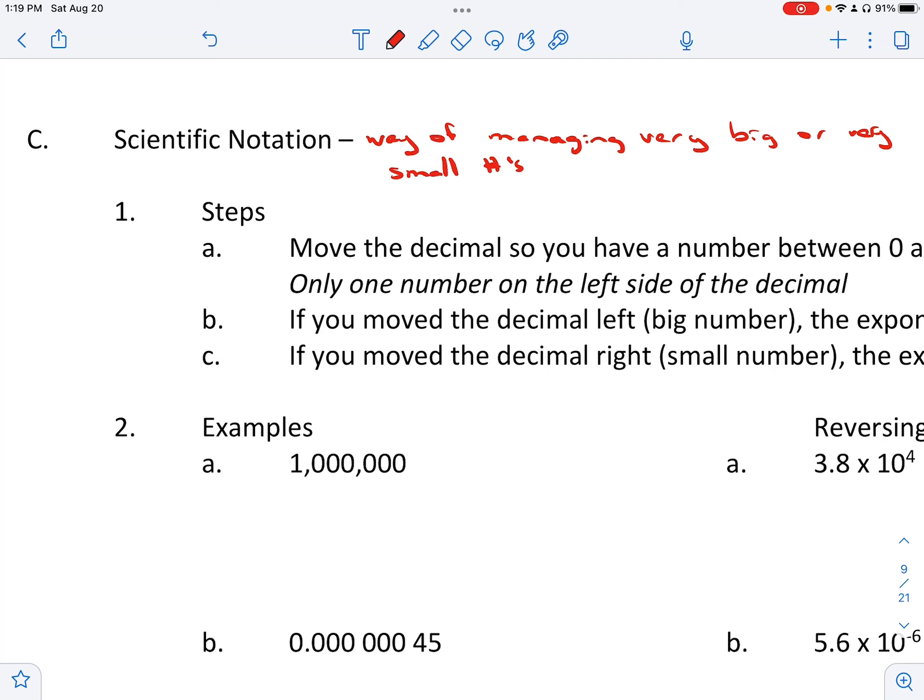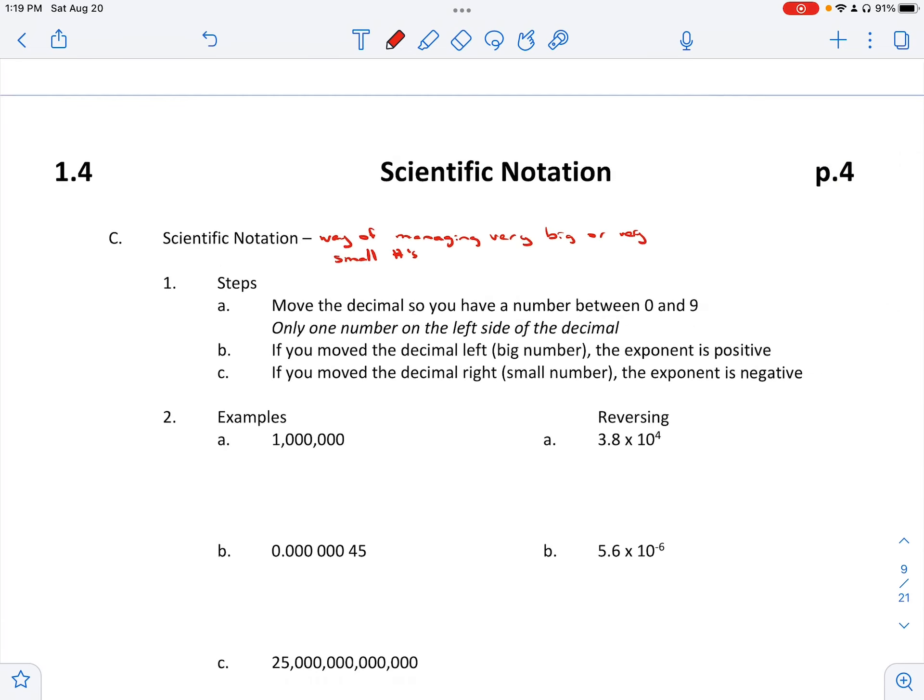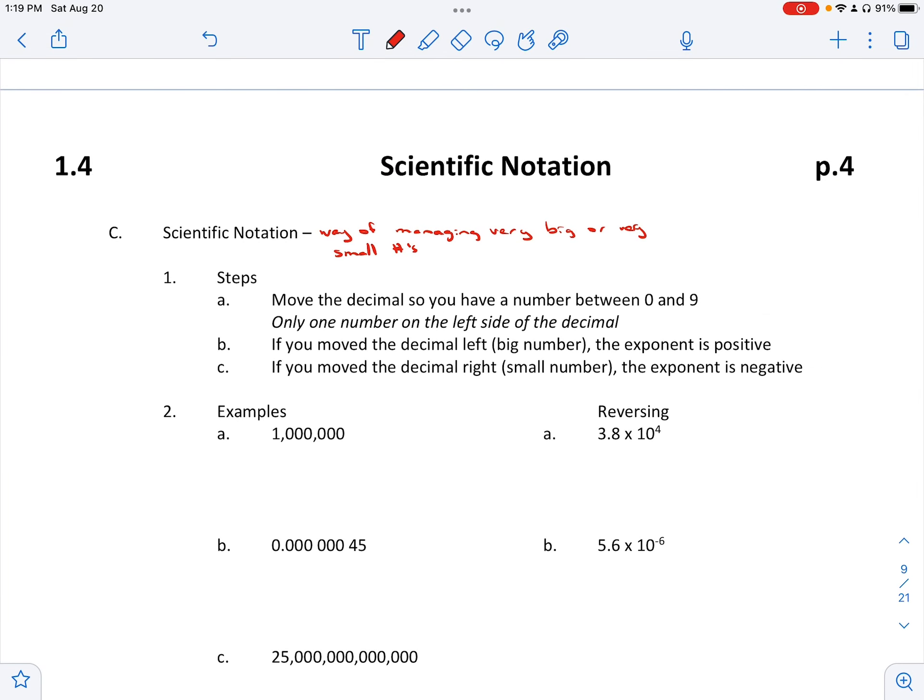It's a way of managing them so we don't have to write out a ton of zeros. This actually came about when they were using type sets to set up printing presses and think about how many times they did that. So this is actually where that started but that's another story for another day.